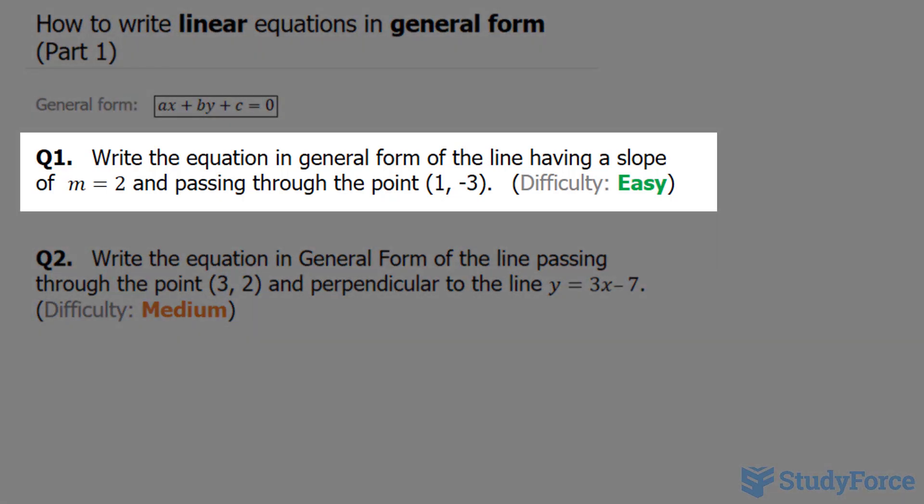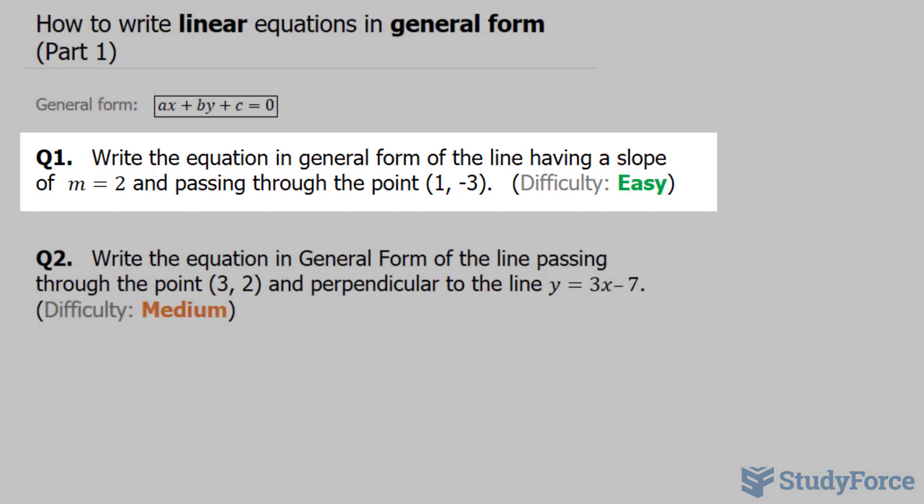The question reads: write the equation in general form of the line having a slope of m equals 2 and passing through the point (1, -3).